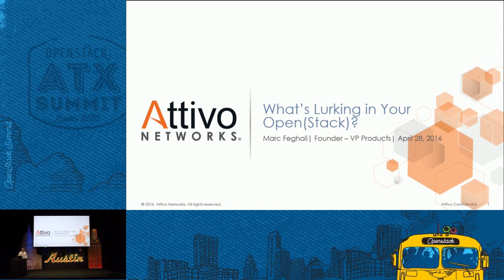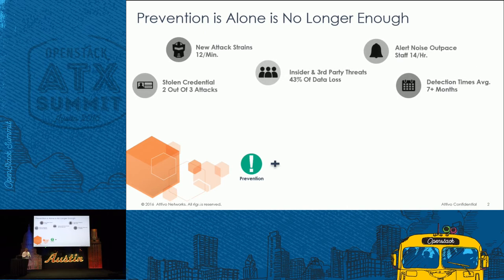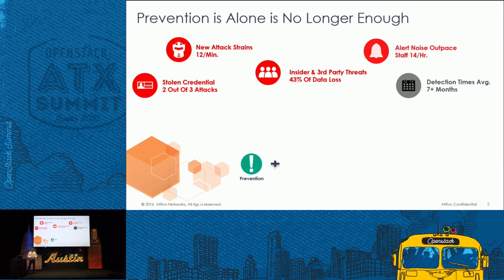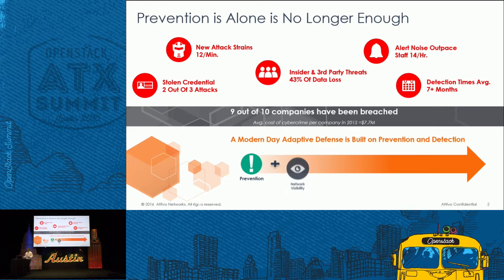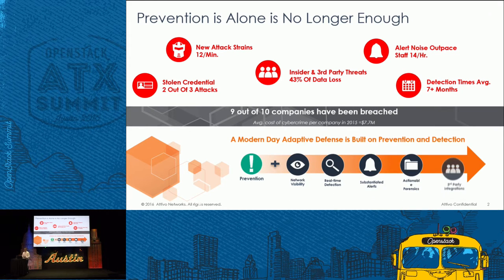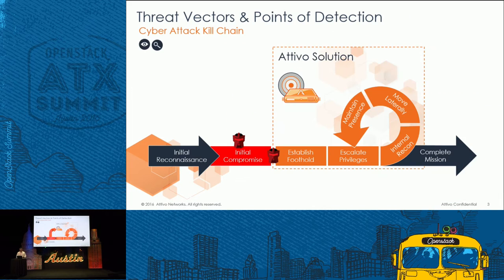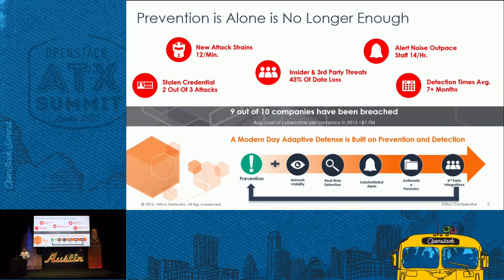So what is Attivo? Attivo focuses on detecting attacks inside the network. We focus on detecting lateral movement type of attacks, targeted attacks, and stolen credentials attacks. Our assumption is the attackers are already inside your network. The reason the attackers are there is that you have multiple vectors of entry today and the prevention systems are not keeping the attacker out — they're not keeping up with the vectors of attack.